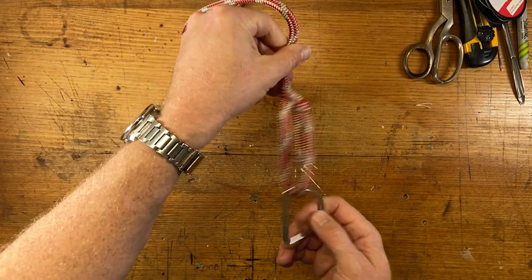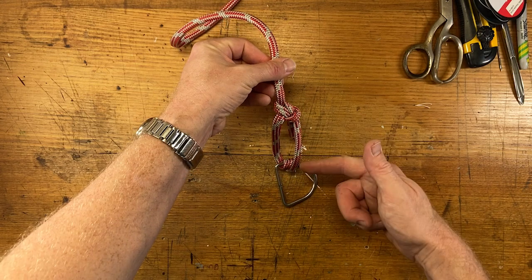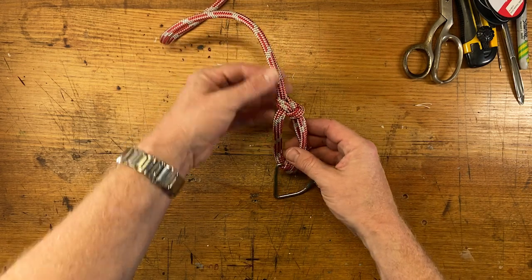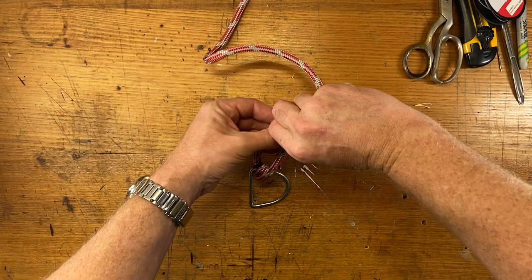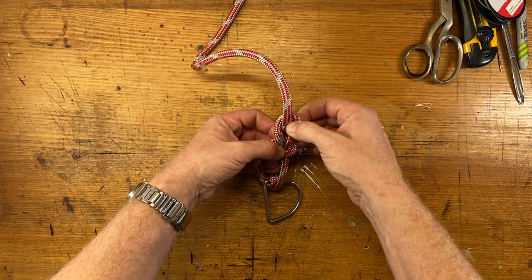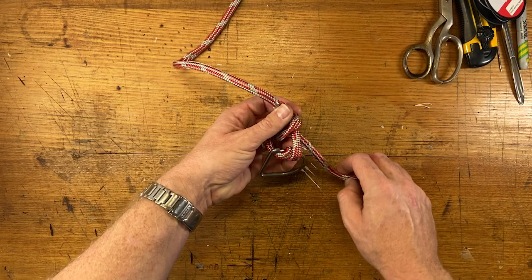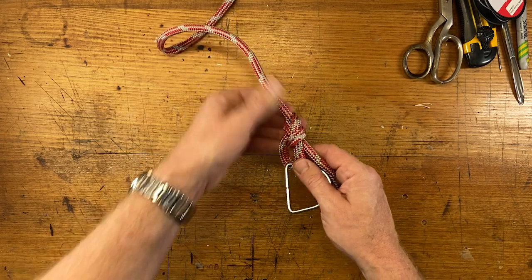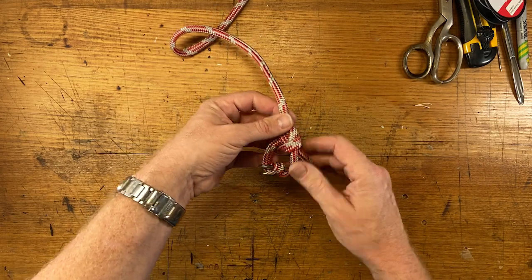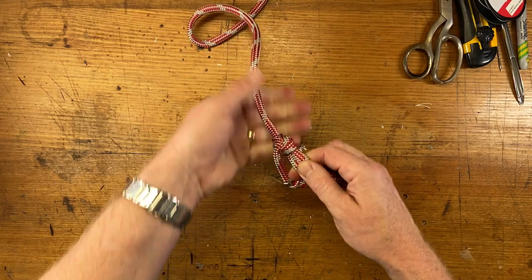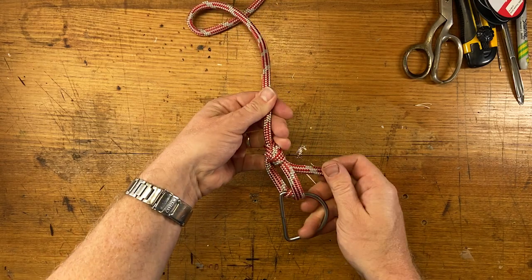Now, you might not be happy with how long that loop there is. You might want to tighten that up. In that case, you just loosen your bowline and kind of scooch things along and cinch them down. Just manipulate it a little bit until you're happy with the length. Then again, pull the bitter end and the standing end to dress the knot.